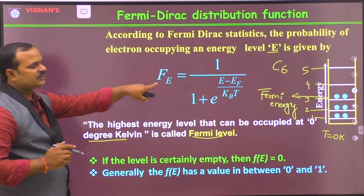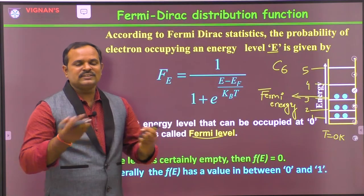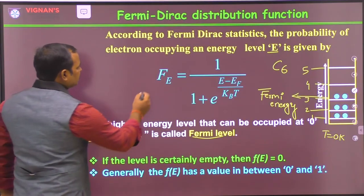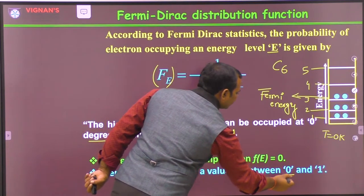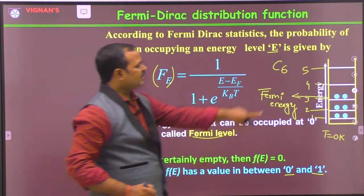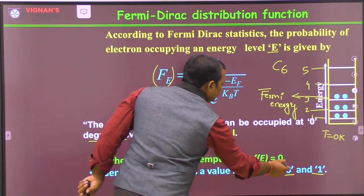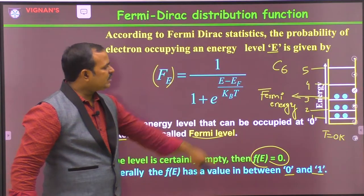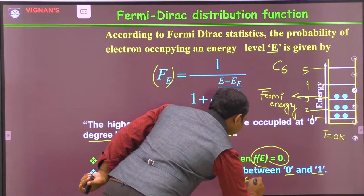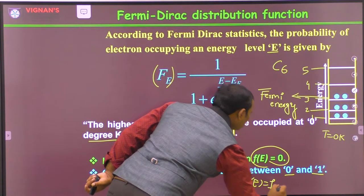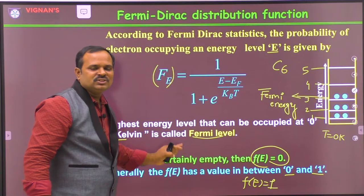In quantum mechanics, we always express probabilities as values between 0 and 1. Similarly, the Fermi-Dirac distribution function also lies between 0 and 1. If there is no particle in a particular energy level, the Fermi-Dirac distribution function gives a value of 0. If a particle or electron is present in a particular energy level, it gives a value of 1.